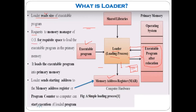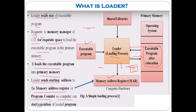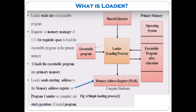The loader requests the memory manager of the operating system to allocate space to load the executable program into primary memory. Memory management is one functionality of the operating system. After getting the space, the loader loads the executable program into primary memory. Then the loader sends the starting address to the memory address register or program counter so the computer can start execution.